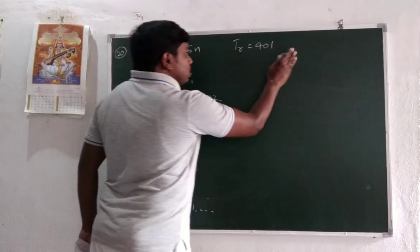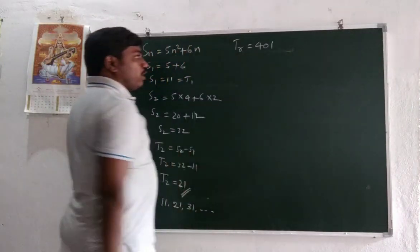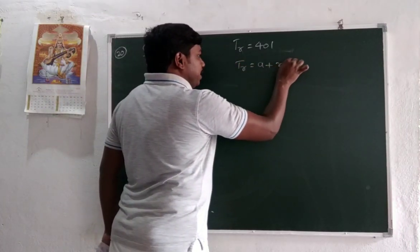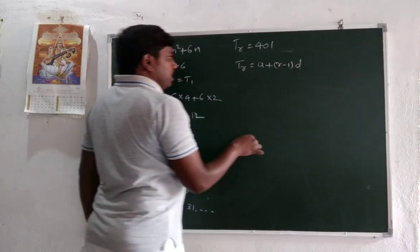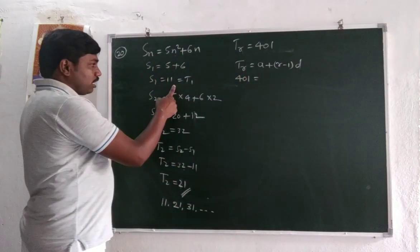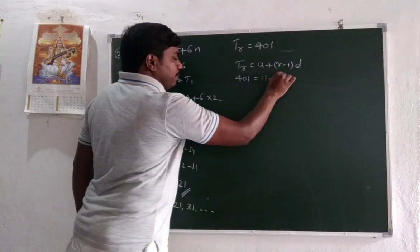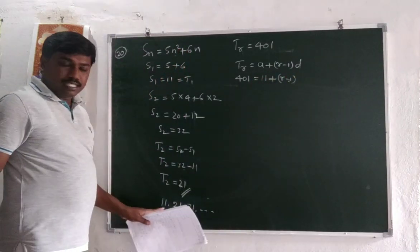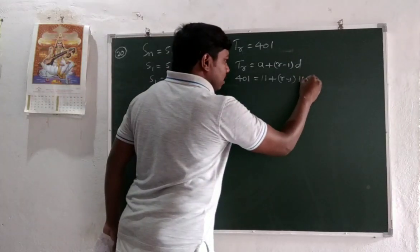So now rth term - assume rth term is 401. What is the rth term of AP? Rth term is a + (r-1) × d. The rth term is given 401. The first term is 11. We need to calculate r. What is the common difference? 10 is the common difference.